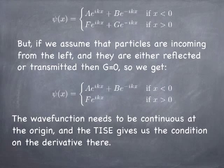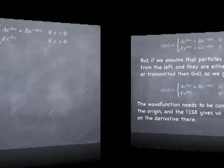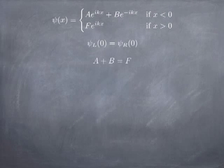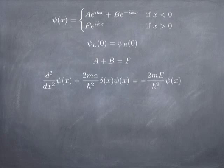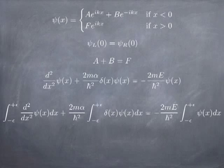We know the wave function has to be continuous, but it also has to have a discontinuity in the first derivative, the same way it did for the bound state. For continuity, a plus b has to equal f, because plugging zero in for x gives a plus b equals f. If you write out the Schrodinger equation including the delta function at the origin and integrate from just left of the origin to just right, the first term gives the difference in the first derivative, the second term gives a constant, and the right-hand side is zero because we're taking an infinitesimal integral of a finite wave function.